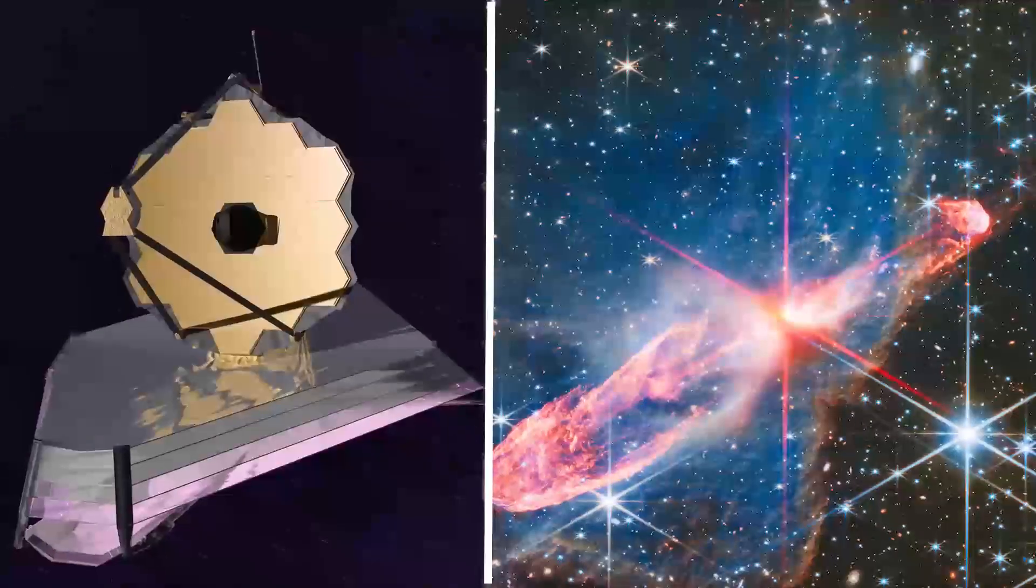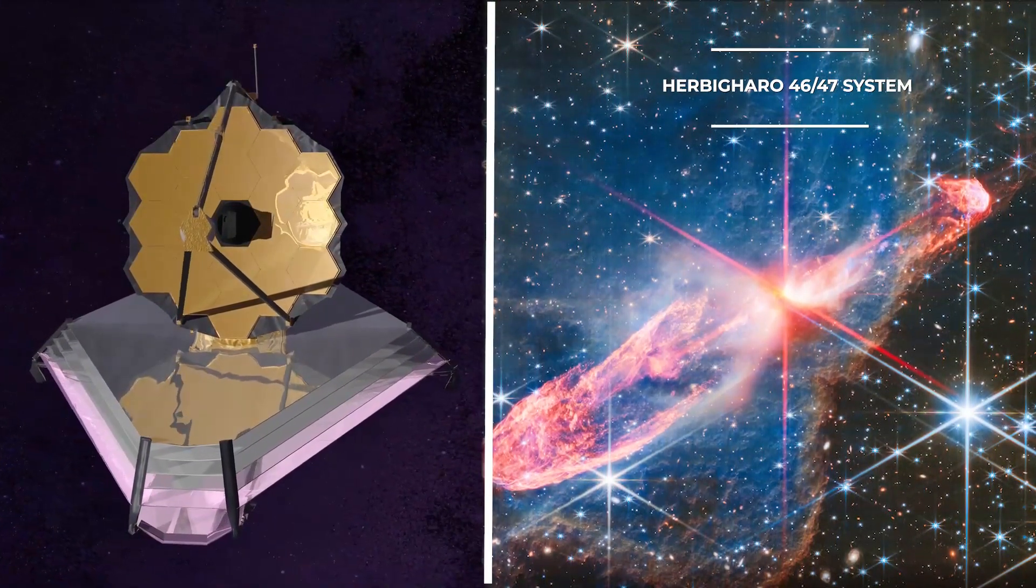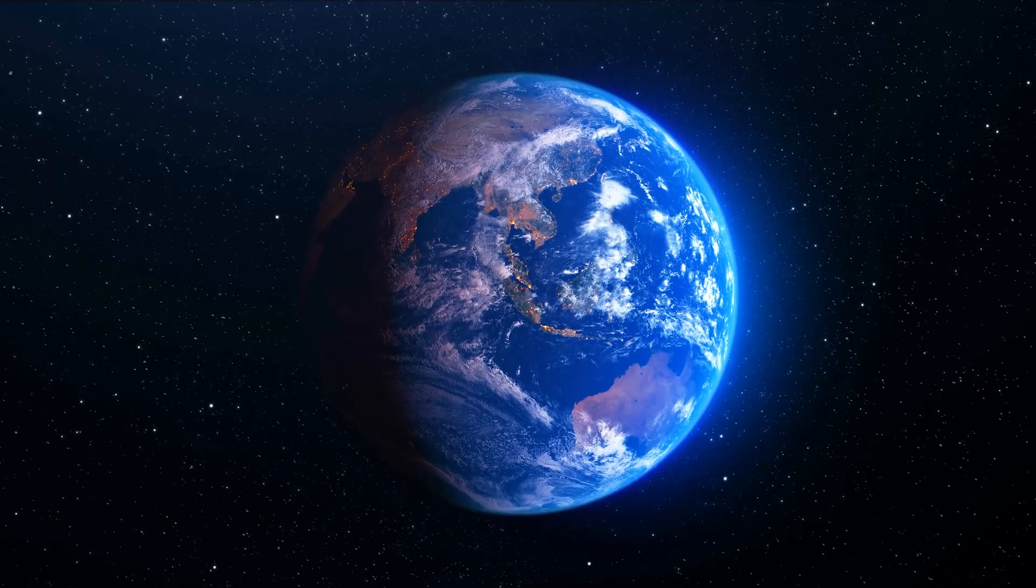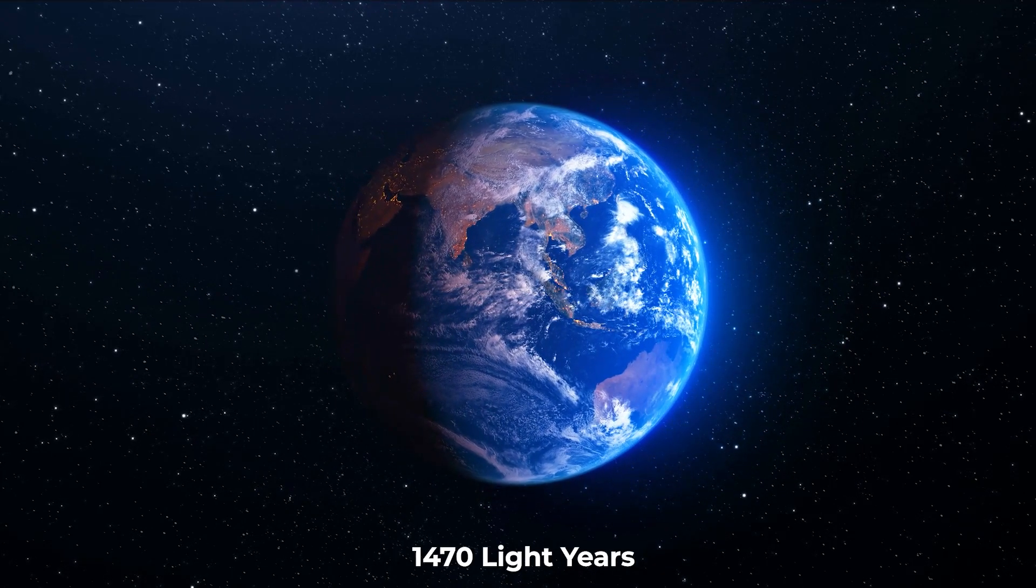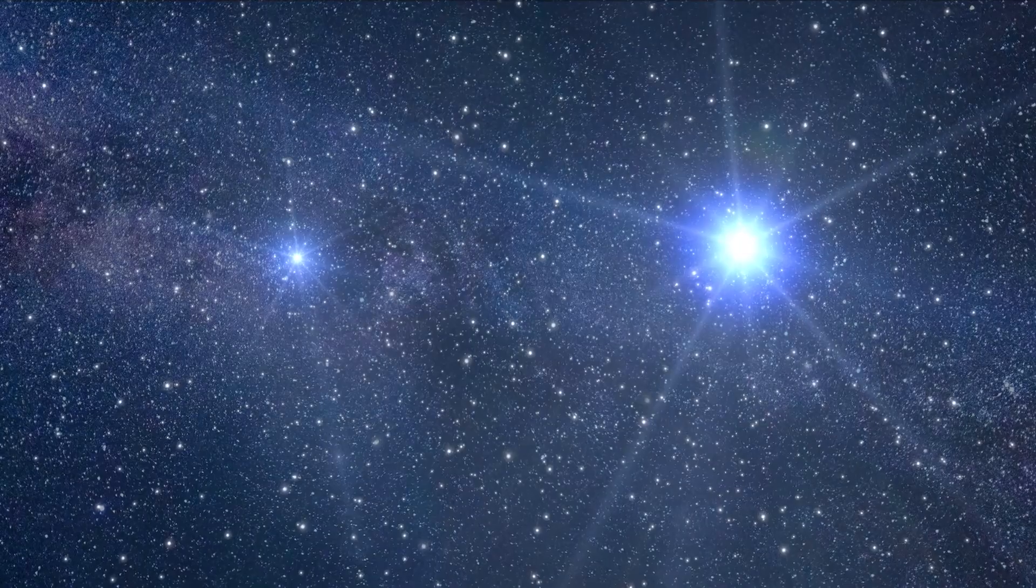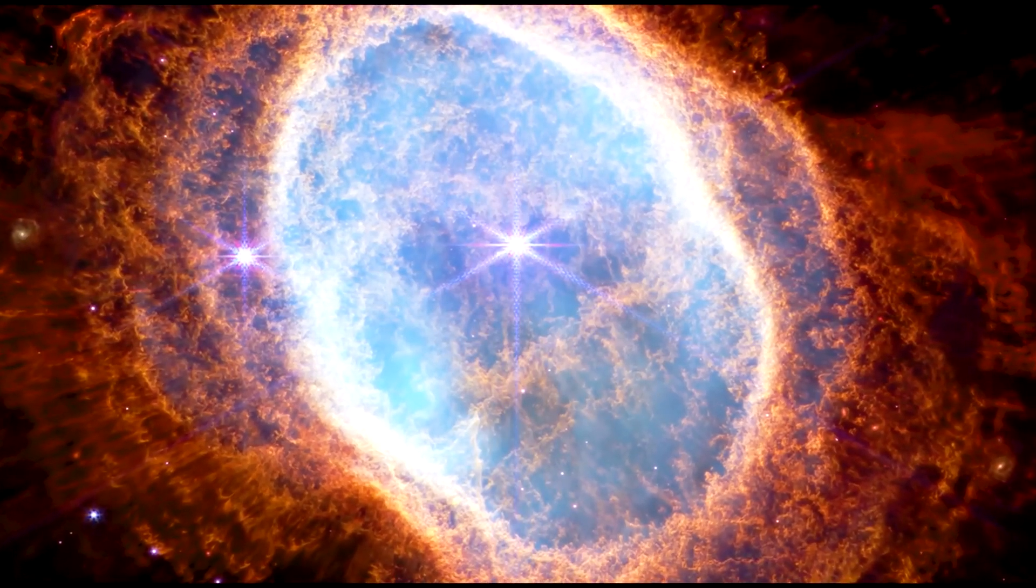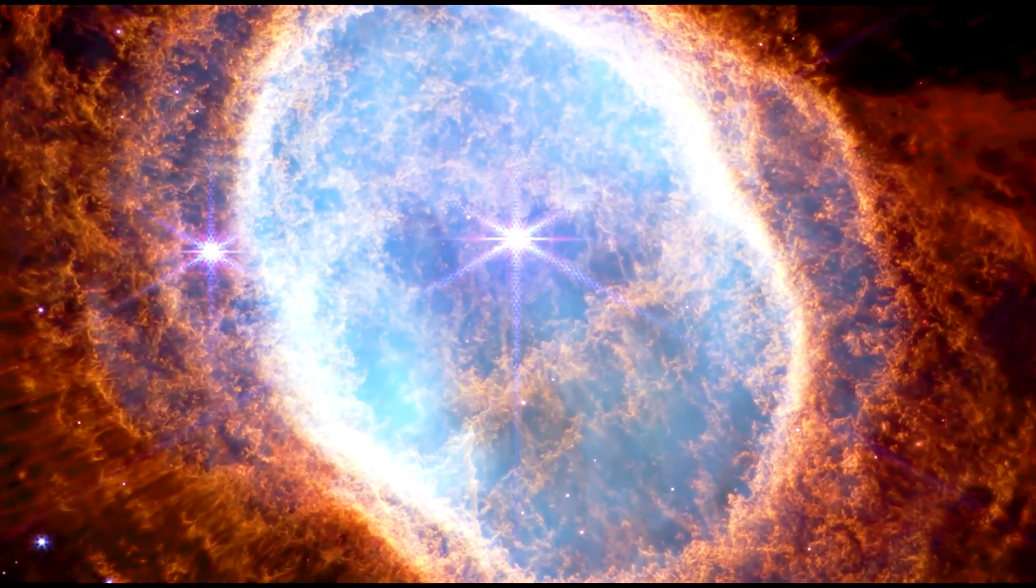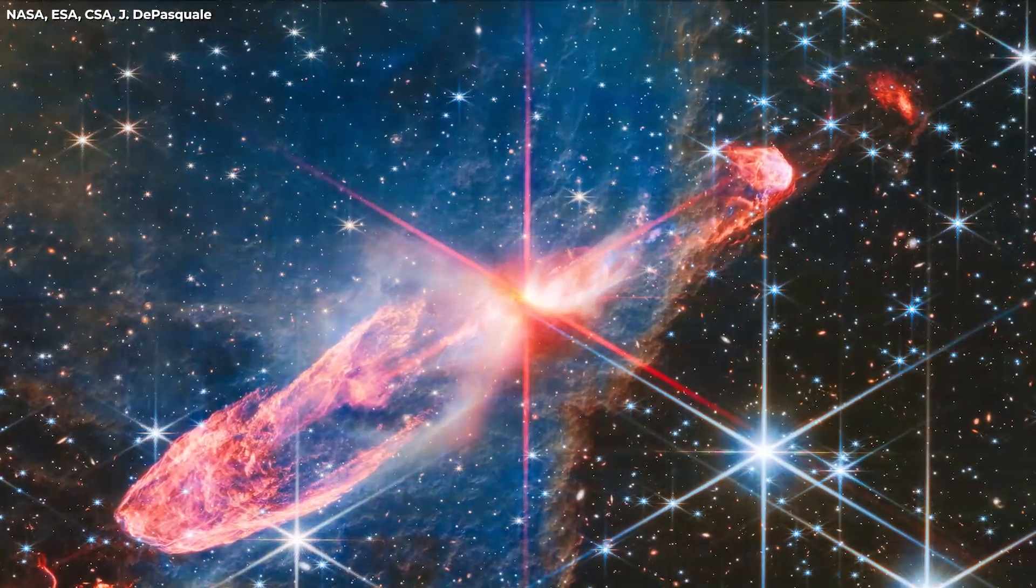The James Webb Space Telescope recently examined the Herbig-Haro 4647 system, offering mind-bending new photos. It's a nebula located roughly 1,470 light-years from Earth containing a pair of developing binary stars. This image normally appears in visible light as a black cloud with bright light shining from it. However, the James Webb image reveals far more detail.